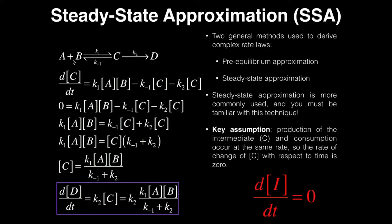Let's look at the equation right here. I have a chemical reaction: A plus B — these are my reactants or substrates — they're in equilibrium with species C. The forward reaction of the equilibrium is K1, the reverse is K-1, and then C can be consumed to form D, expressed by the one-way rate constant K2. In this reaction, C is what we call an intermediate, because it's being consumed by the K2 reaction but also being formed through the K1 reaction.